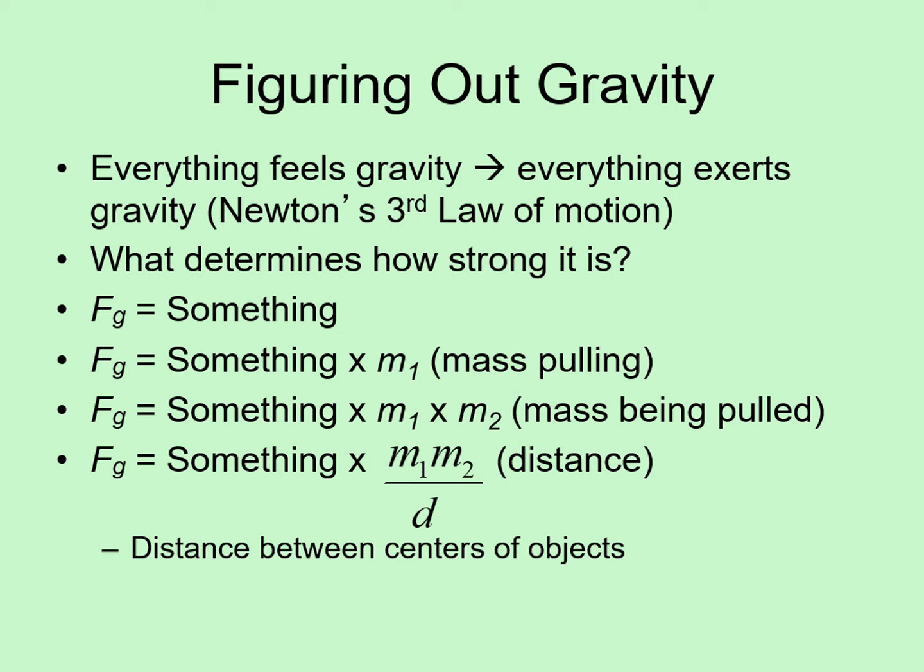We've almost got the law of universal gravity. There are just two more things we need to do. First, when we actually calculate how the force behaves, it turns out that it gets weaker with distance even faster than what we have here. In fact, it drops off with the distance squared instead of just the distance. Secondly, we need to put something in there to get the units right. We've got force units on one side of the equation, and we've got mass squared divided by distance squared on the other side. They need to match up. So we put in something called the gravitational constant, capital G. We'll look at this more closely on the next slide.